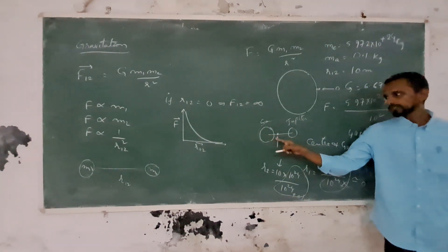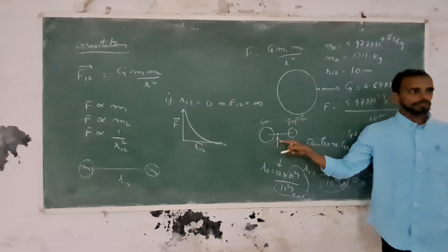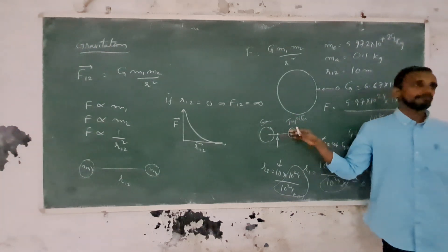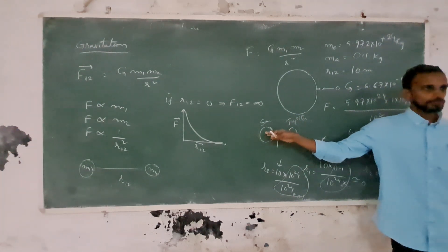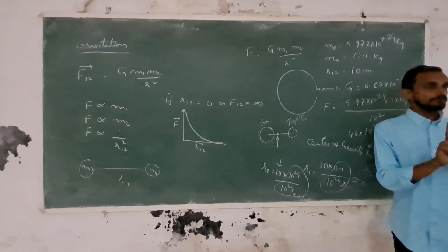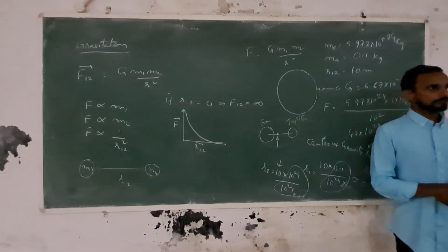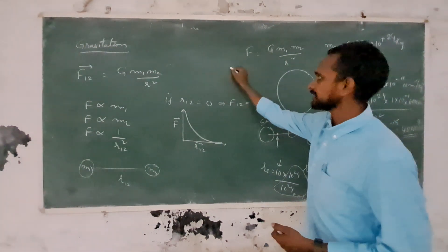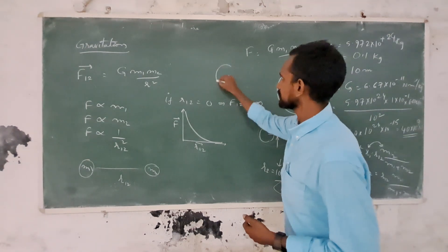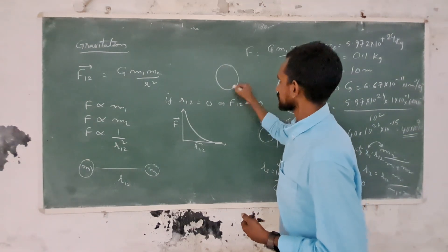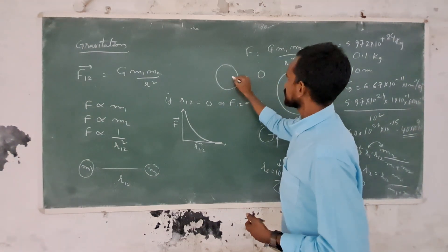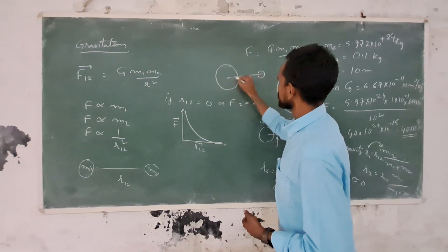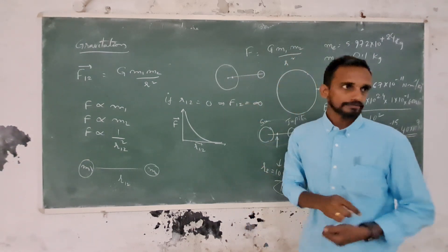The Sun and Jupiter have a center of gravity in between them. Because Jupiter is very massive, the center of gravity may actually lie within the Sun, but it is shifted slightly toward Jupiter.